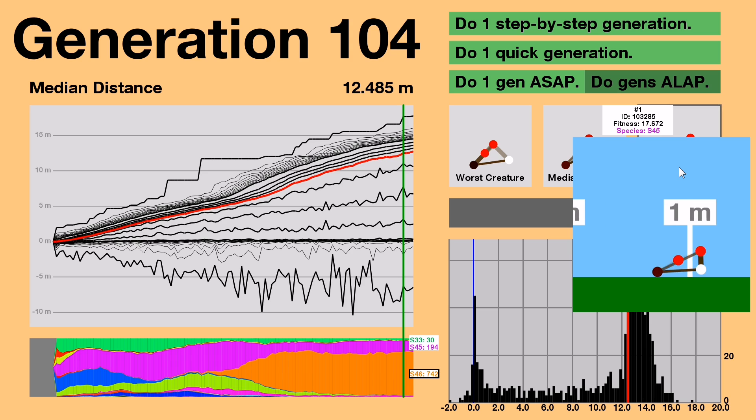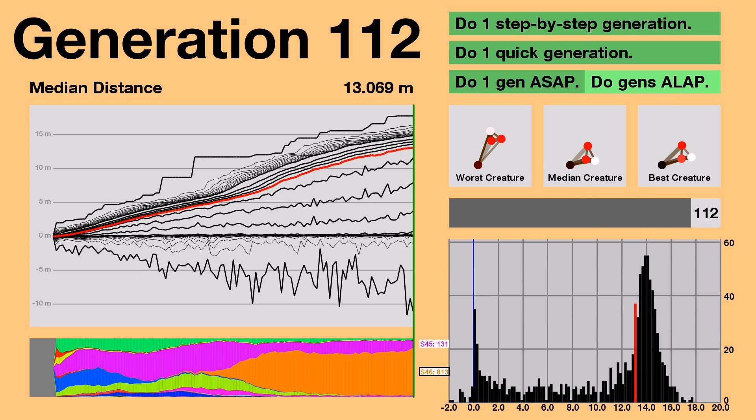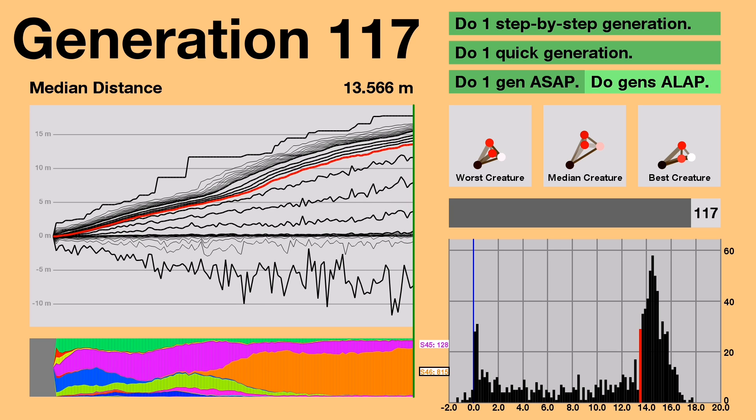The leader of generation 104 seems to be an S45 species again, but it just looks like a triangle with a node attached by really weak muscles that doesn't do anything. Now let's push this simulator to its limits. Let's go as far as possible.